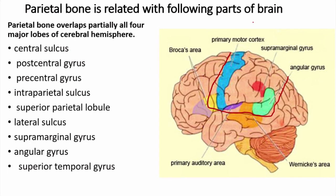The parietal bone is related with the following parts of the brain. It overlaps all four lobes of the cerebrum: the frontal lobe, parietal lobe, part of the occipital lobe, and part of the temporal lobe. The areas related with the parietal bone include: central sulcus, postcentral gyrus, precentral gyrus, interparietal sulcus, superior parietal lobule, lateral sulcus, supramarginal gyrus, angular gyrus, and superior temporal gyrus.